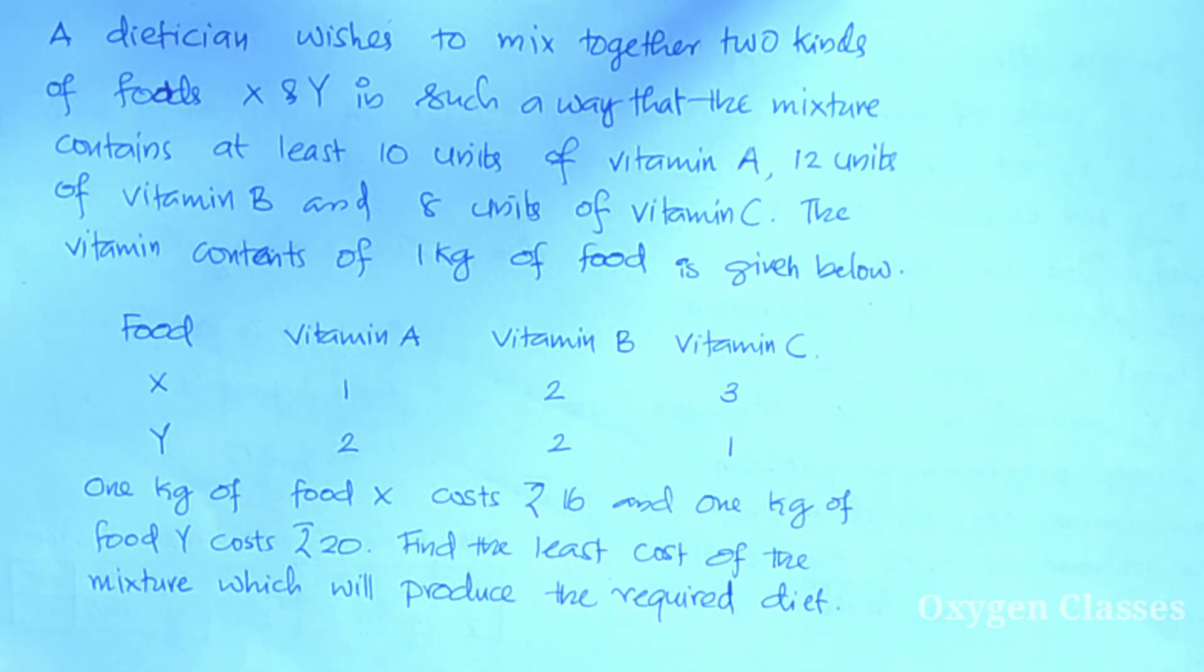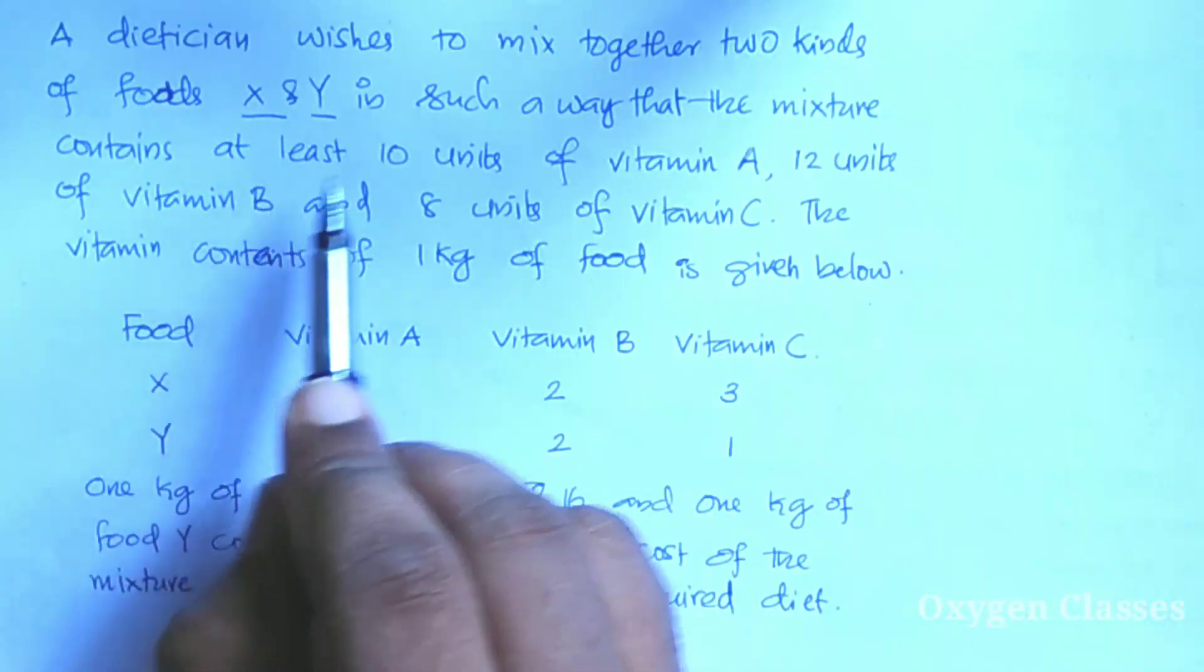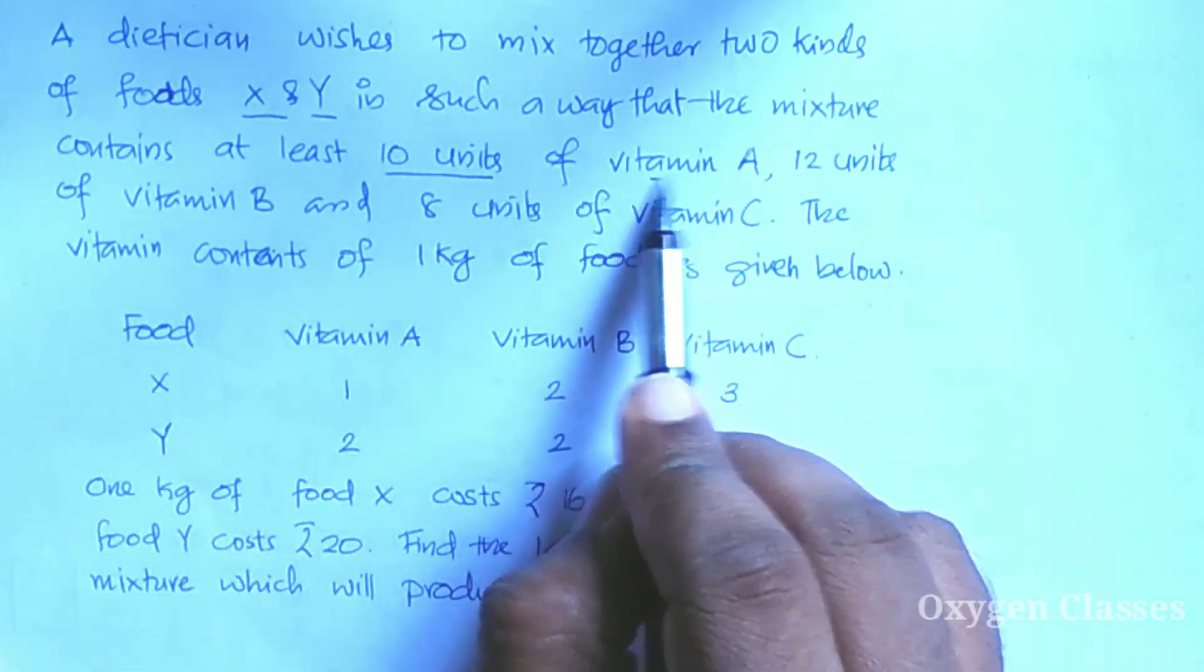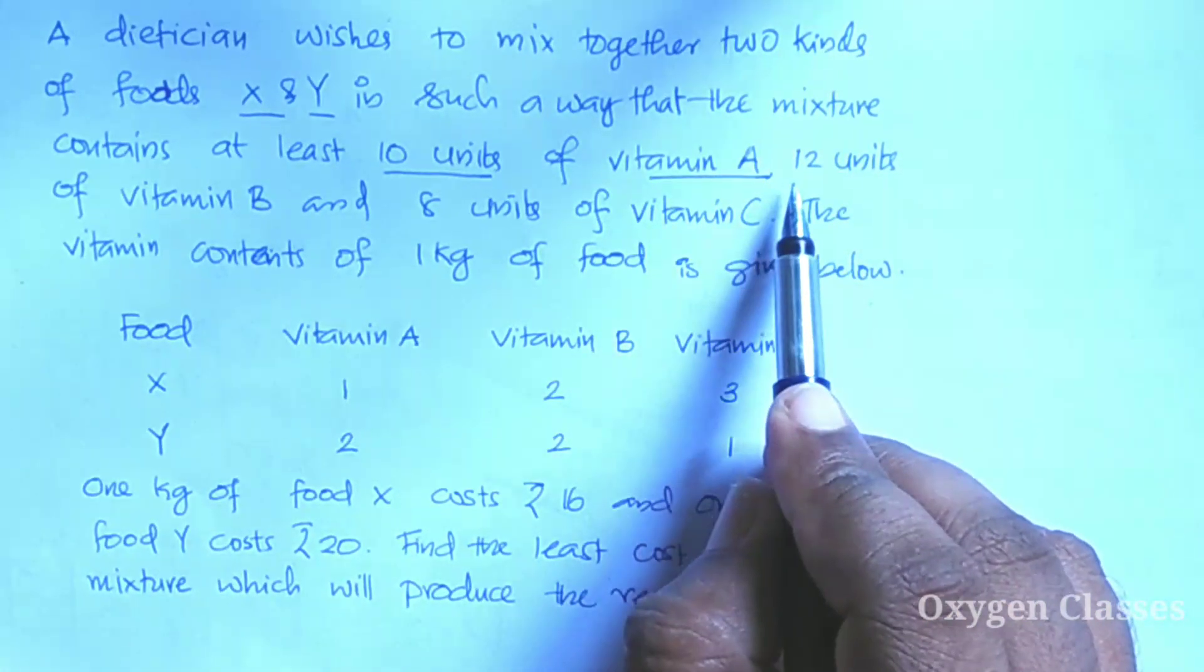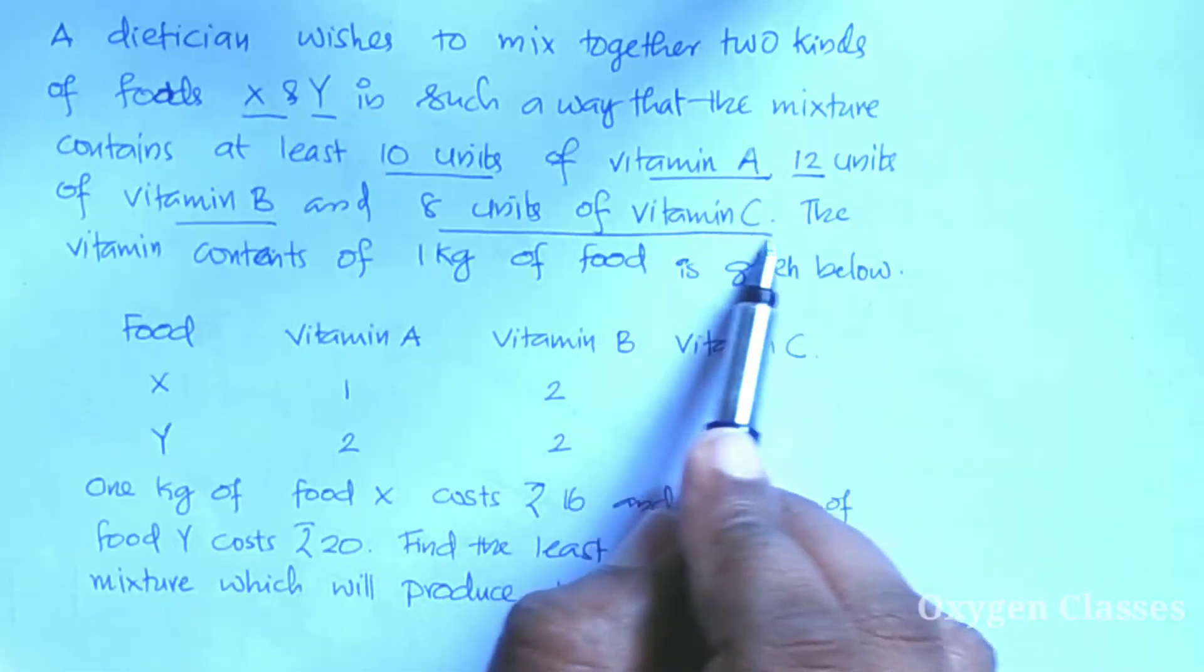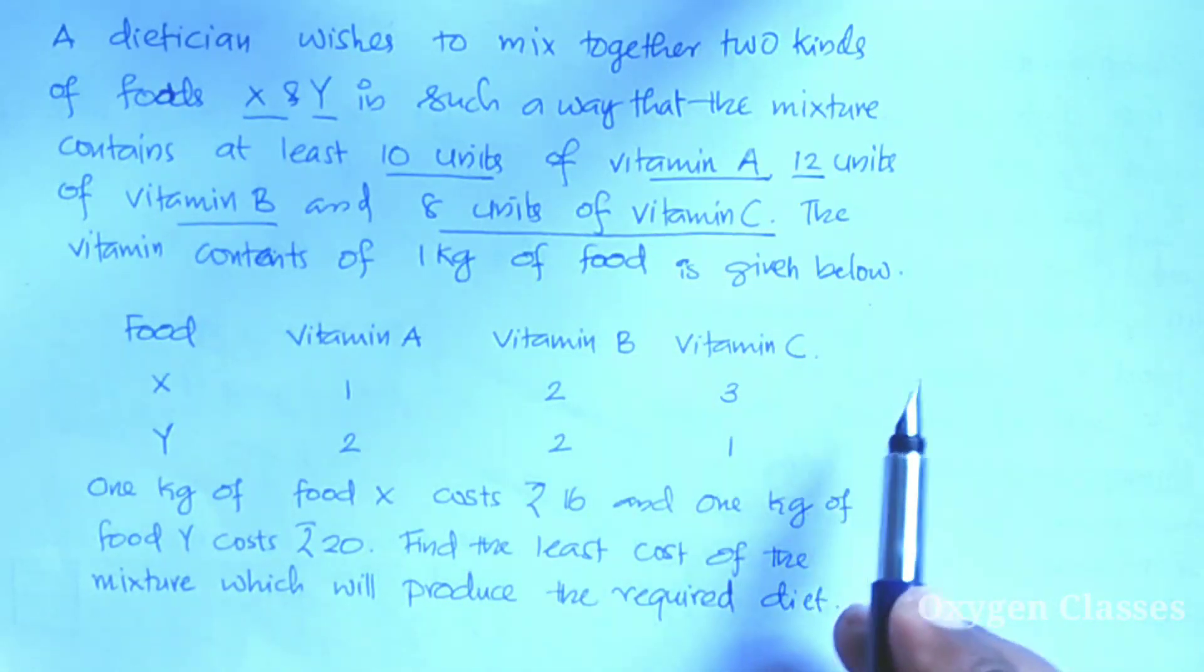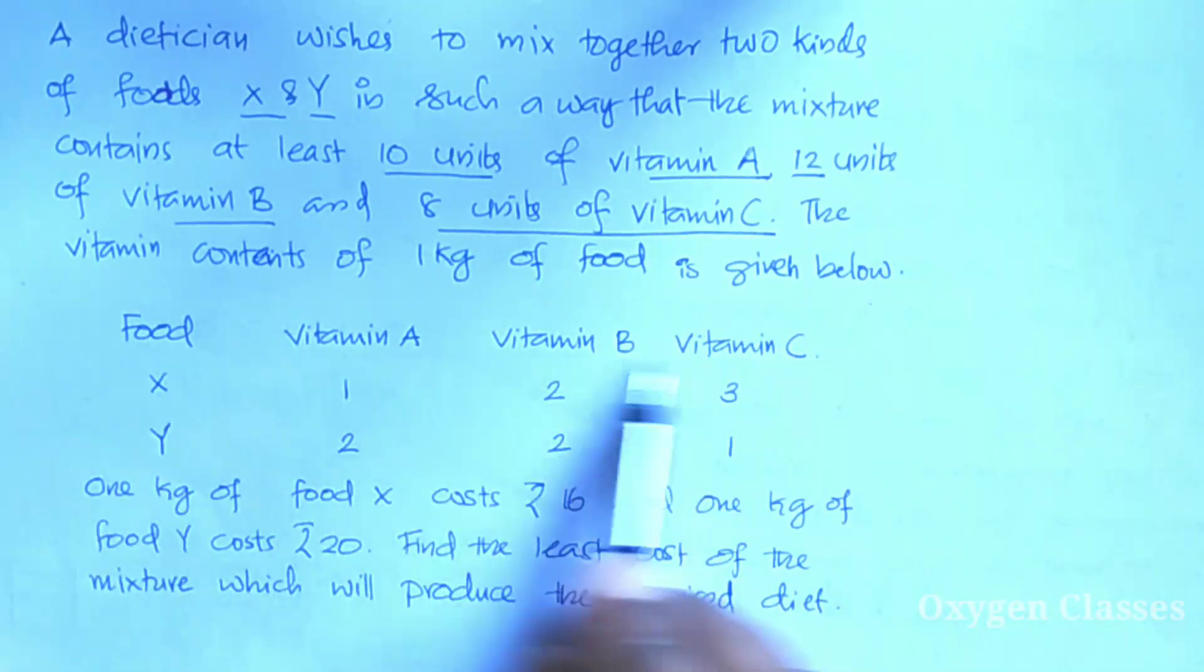A dietitian wishes to mix together two kinds of foods X and Y in such a way that the mixture contains at least 10 units of vitamin A, 12 units of vitamin B, and 8 units of vitamin C.